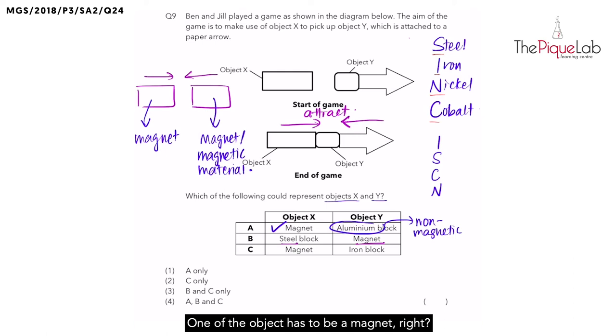One of the objects has to be a magnet, right? So we already have a magnet. And the other has to be a magnetic material. So let's check. Is steel a magnetic material? Yes. Steel is a magnetic material. And therefore, option B would work.